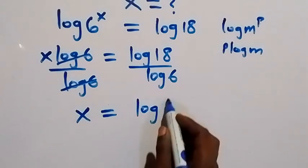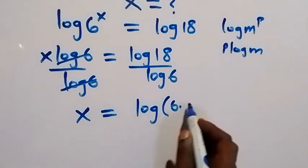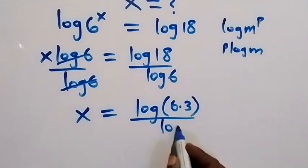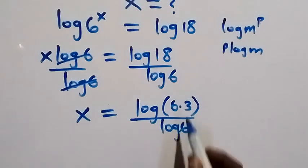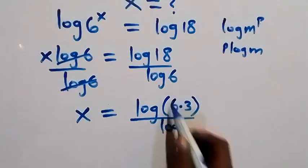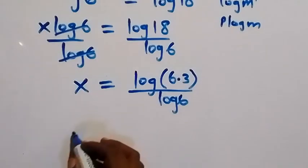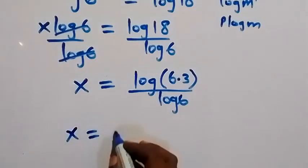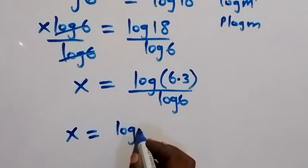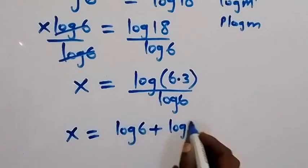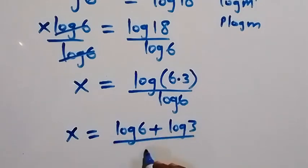Which we can write as log 6 times 3, then over log 6. Then from here we can separate this 6 times 3 into logs. And this will be x equals to log 6 plus log 3 divided by log 6.